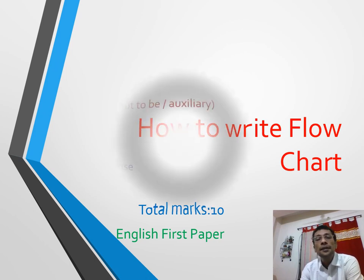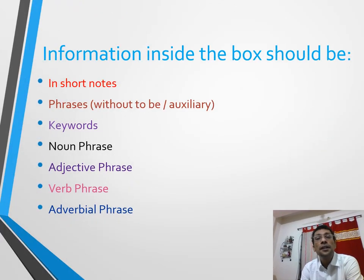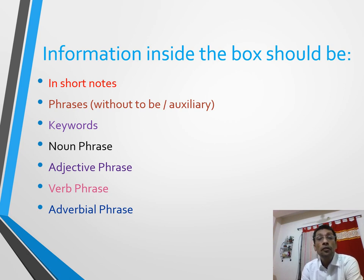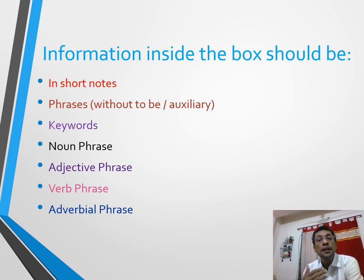Let us have a look at the information that should be included inside the boxes of the flowchart. The information you must put inside must follow certain grammatical rules. First, it should be written in short notes — that is, keywords and phrases, not clauses — and it must be written without to-be verbs or auxiliary verbs. Keywords should be chosen, or it can be made into noun phrases, adjective phrases, verb phrases, or adverbial phrases.